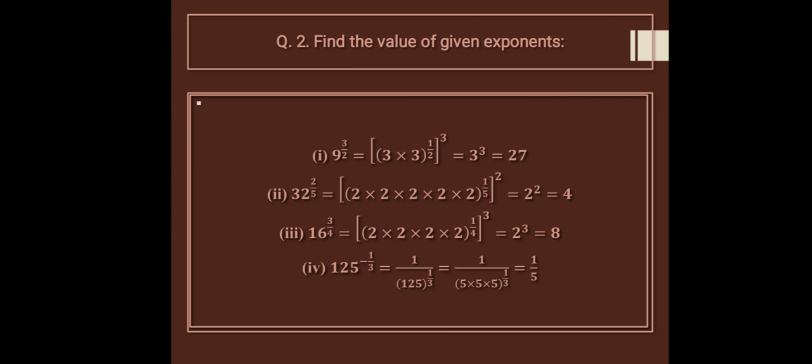125 raised to the power minus 1 upon 3 — the minus sign moves 125 to the denominator, so the power becomes positive. It is 1 upon the cube root of 125, which equals 1 upon 5.